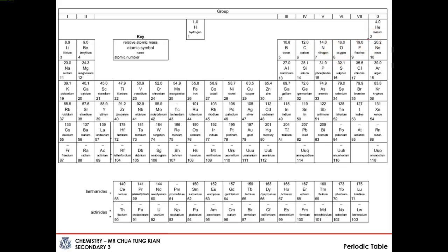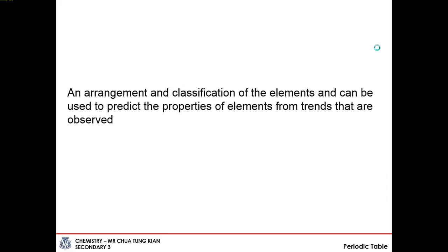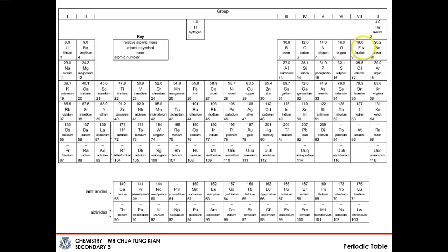So why are elements arranged in this manner in the table? And what is the purpose of arranging them this way? If you answer these two questions, you will be able to understand this entire topic. The Periodic Table is basically an arrangement and classification of elements to allow us to predict the properties of elements from the trends observed. For example, if fluorine undergoes a certain reaction, we can predict that chlorine, bromine, iodine, and astatine would exhibit similar chemical properties but of varying degrees.